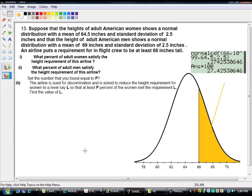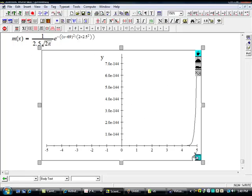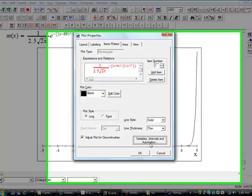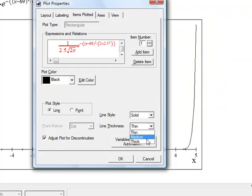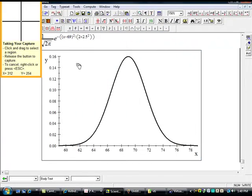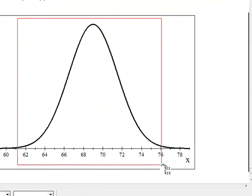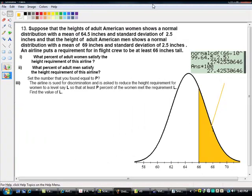Now it says, what percentage of the adult men will satisfy that? So let's bring the curve down for men. It's always just safer to make it. You don't have to, but it's good to make it. So let's go like 59 through 79. Just trying to make it quickly. I should have had it ready before, but I did not. But that's okay.